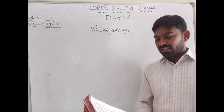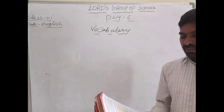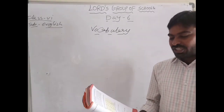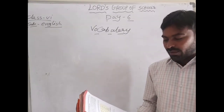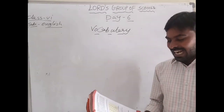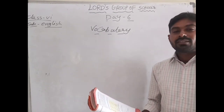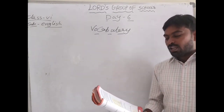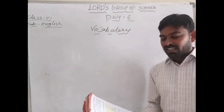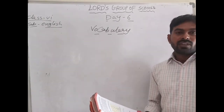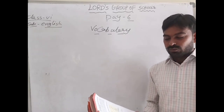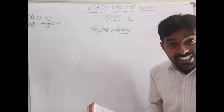So these antonyms — you can see that here they have given: big, dark, happy, large, leave, long, near, open, start, thick, appear, calm. So when we see 'big,' its opposite is 'small,' or we can say 'tiny.'